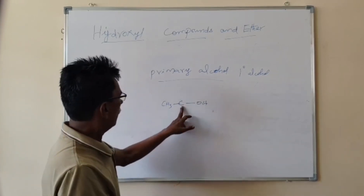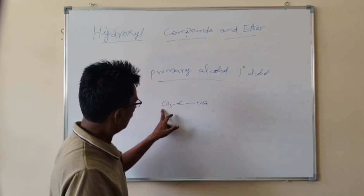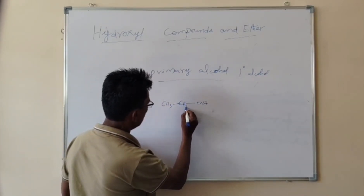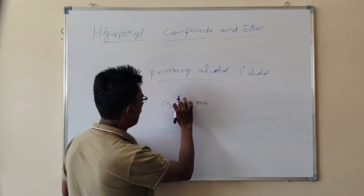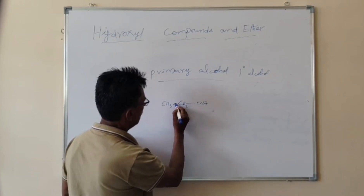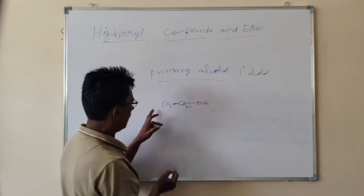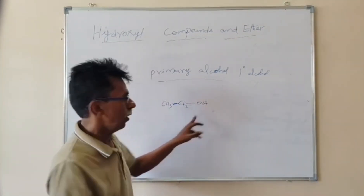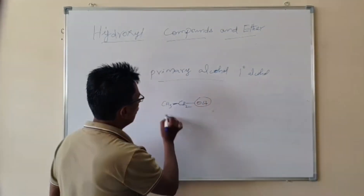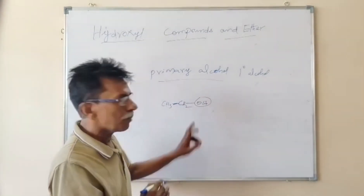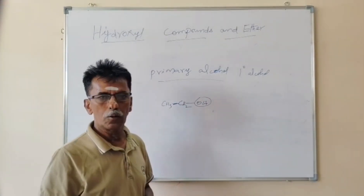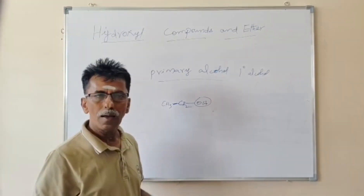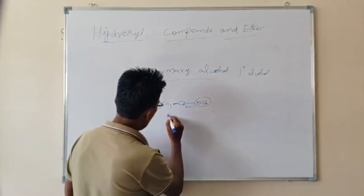In this compound, the carbon atom is linked with only one alkyl group, so this is a Primary Alcohol. For example, CH3-CH2-OH is an example of Primary Alcohol, where the OH is linked with only one alkyl group. The name of this alcohol is called ethyl alcohol or ethanol.